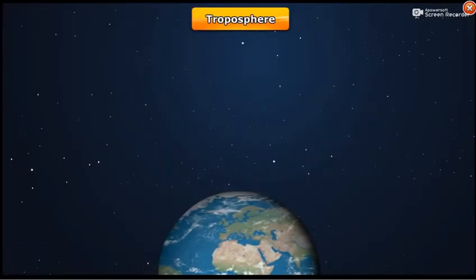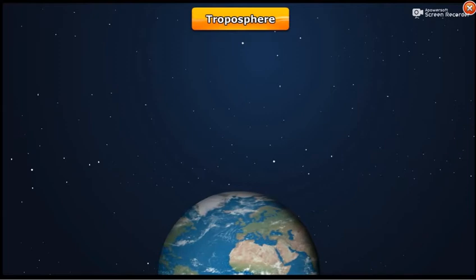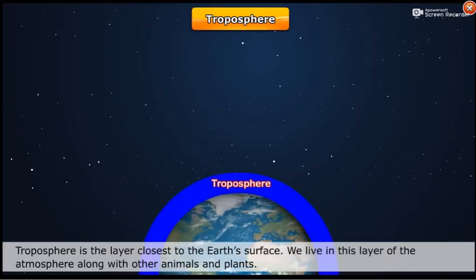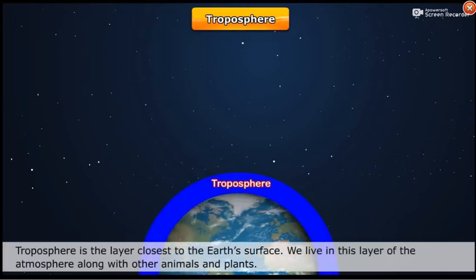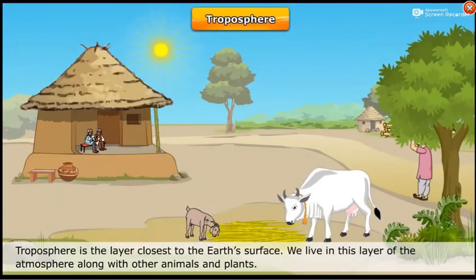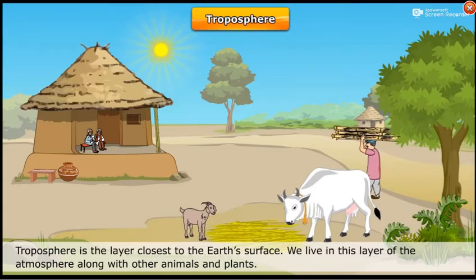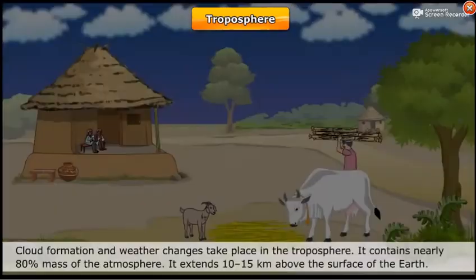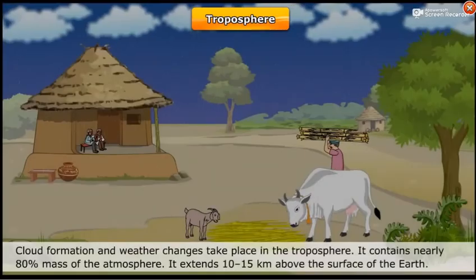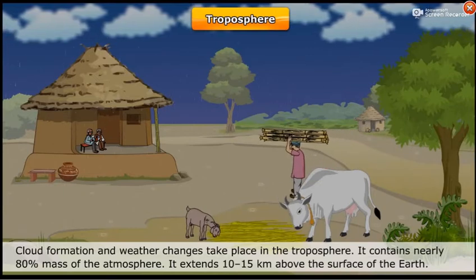Troposphere. The troposphere is the layer closest to the earth's surface. We live in this layer of the atmosphere along with other animals and plants. Cloud formation and weather changes take place in the troposphere.